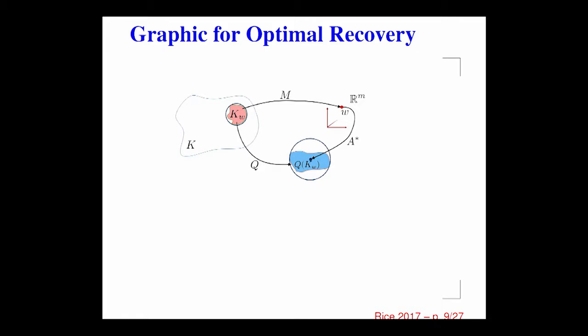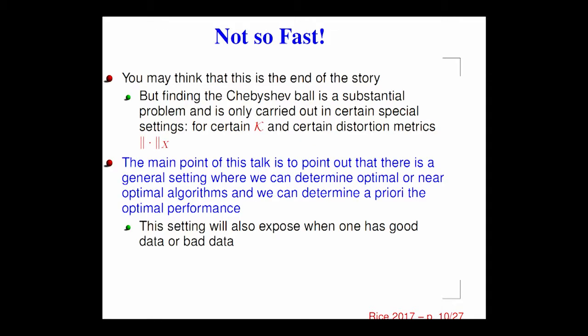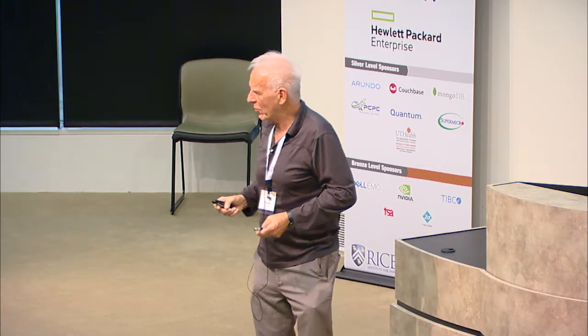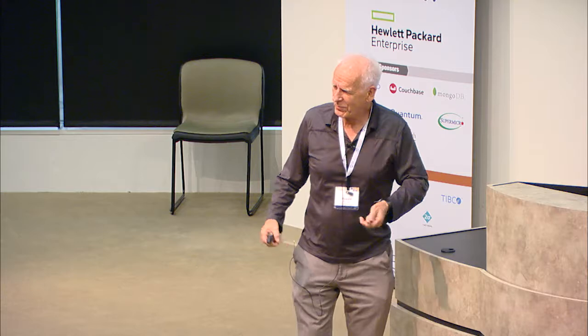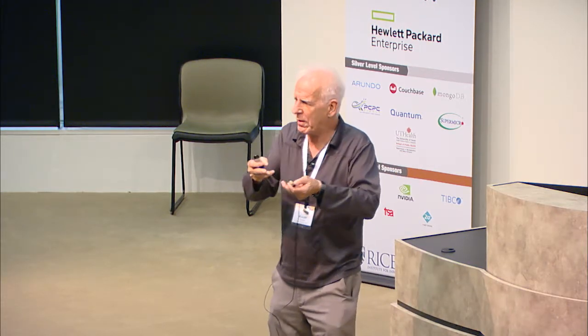The best I can do to approximate is to take the center of the smallest ball that contains K_w — it's called the Chebyshev ball. The best error I can give for approximating f is the radius of this ball. I take the center as the approximation, and the radius will be the error. That's an a priori estimate for the error. Similarly for a quantity of interest: you look at all guys in K_w, look at the range of the quantity of interest, and take the smallest ball that contains it. But it's very hard to find a Chebyshev ball in many contexts.